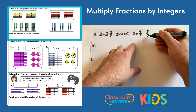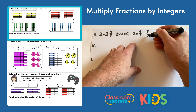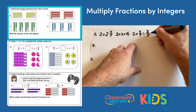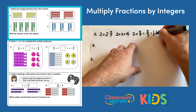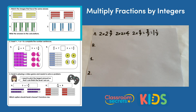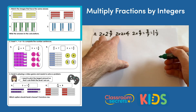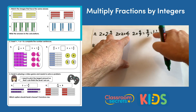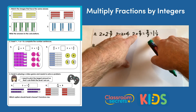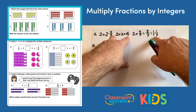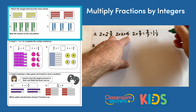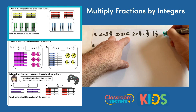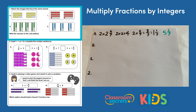Eight sevenths is an improper fraction, so if we convert that to a mixed number we can make one whole with one seventh left over. Now we add that to the four we got from multiplying the whole numbers, so four add one and one seventh gives five and one seventh.